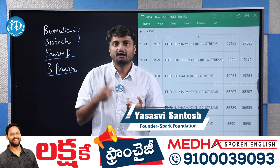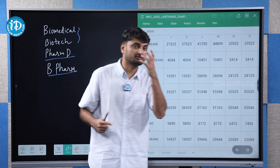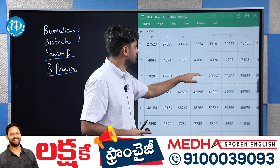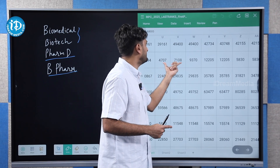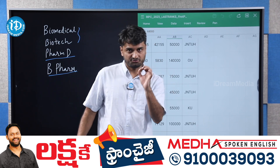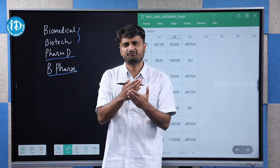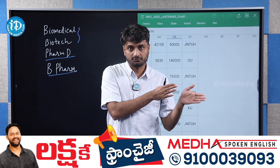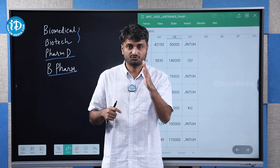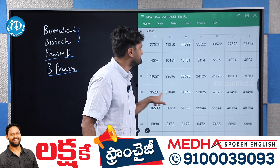CBIT has very good placements and Biotechnology is a trending branch, so definitely consider it. For the general category cutoff, it is around 4,000 rank. For BCA it is around 10,000, BCB around 5,000, BCC around 4,000, BCD around 4,000, BCE around 4,000. For SC/ST students it is between 7,000 to 12,000. Fees at CBIT are around one lakh forty thousand.